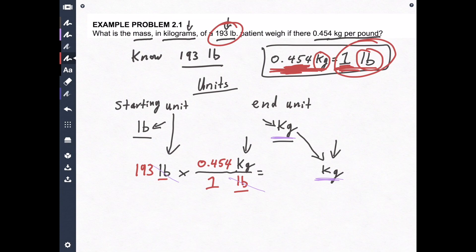All right. Now, you just bust out your calculator. 193 multiplied by 0.454 divided by one equals. Now the calculator gives you 87.622. That is not the correct answer. It's getting to the correct answer. It's close to the correct answer, but it's not correct.